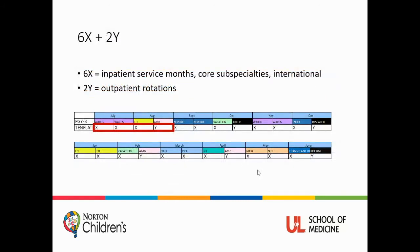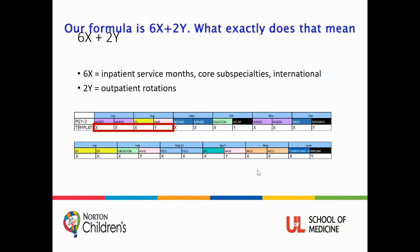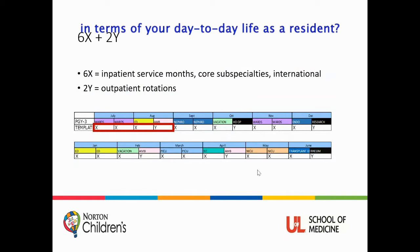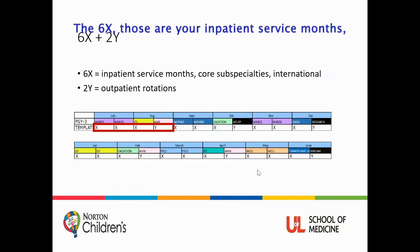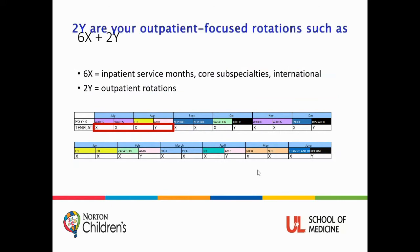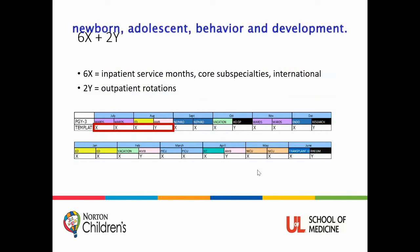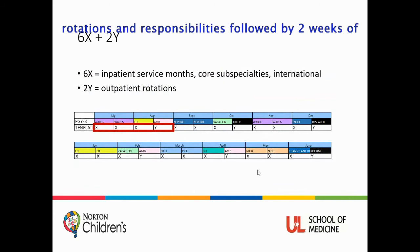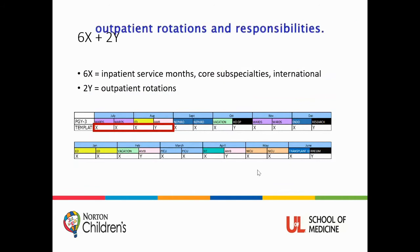So our formula is six X plus two Y. What exactly does that mean in terms of your day-to-day life as a resident? The six X are your inpatient service months, core subspecialties, and international rotations. The two Y are your outpatient-focused rotations, such as newborn nursery and adolescent behavior and development. With this particular formula, you'll do six weeks of inpatient rotations and responsibilities, followed by two weeks of outpatient rotations and responsibilities.